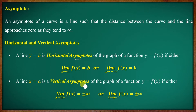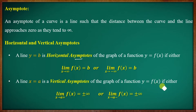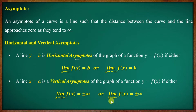The vertical asymptote: the line x equal to a is a vertical asymptote of the graph of a function y equal to f of x, if either the limit as x tends to a plus of f of x equals plus or minus infinity, or the limit as x tends to a minus of f of x equals plus or minus infinity.